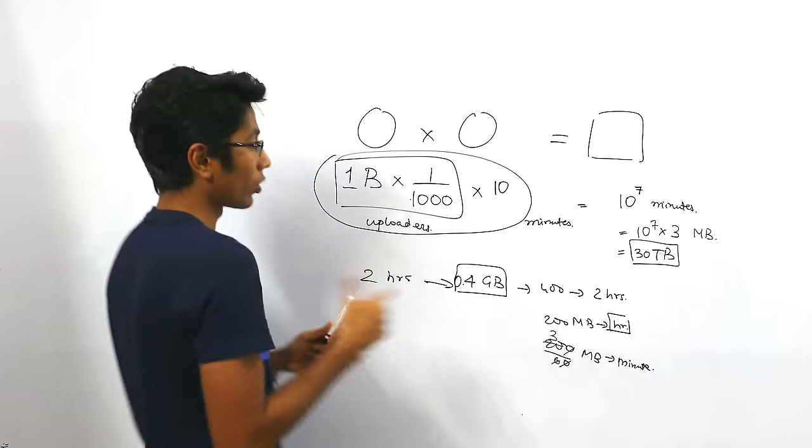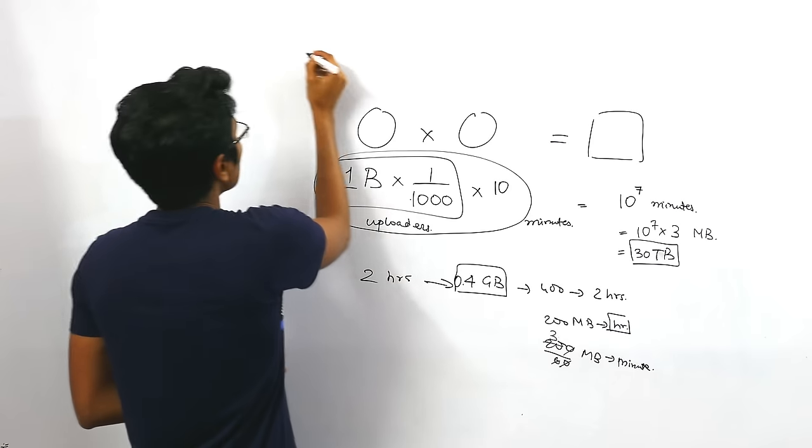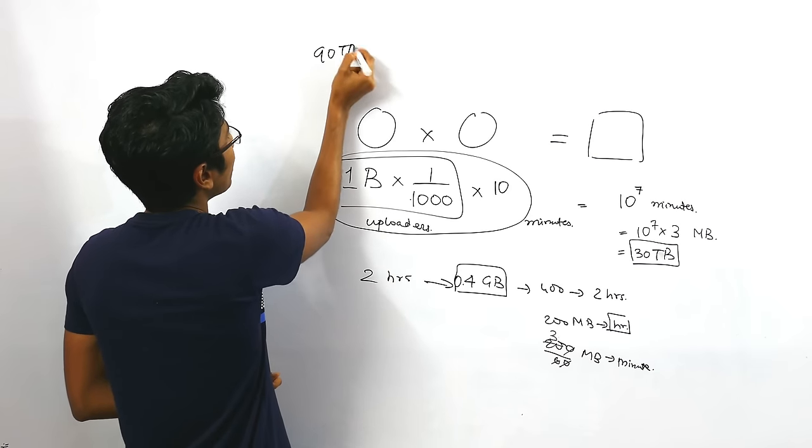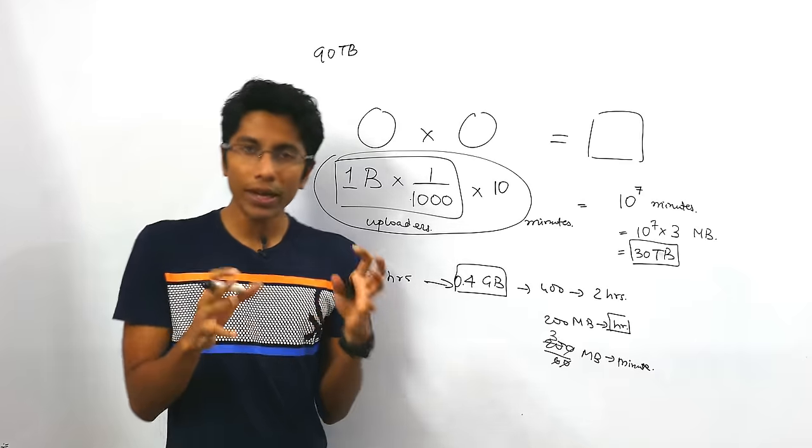So I'm going to keep three copies. I'm going to assume three copies for fault tolerance and redundancy. So that is 90 TB and you don't just keep it in one resolution.